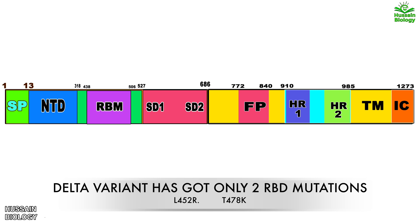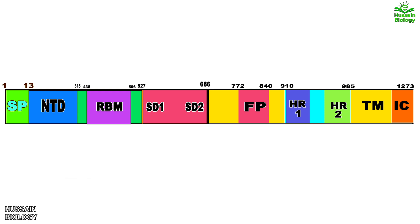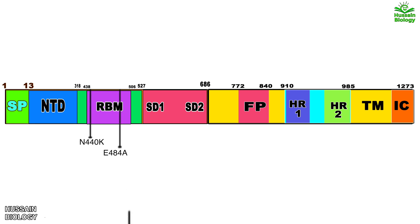In the Omicron variant there are three important mutations on the RBD: N440K, E484A, and N501Y. All three of these mutations are present on the receptor binding motif.